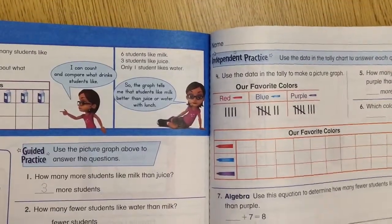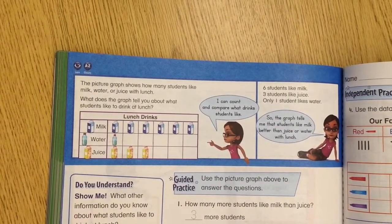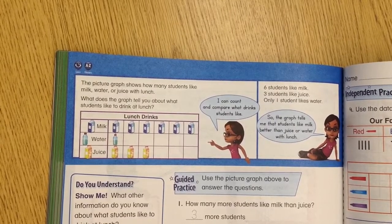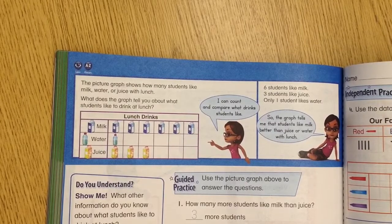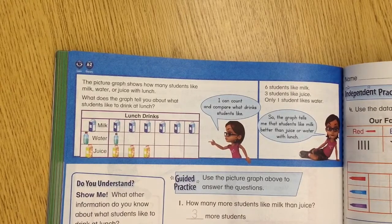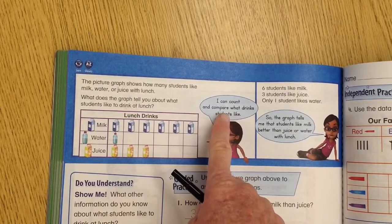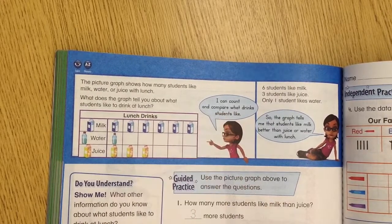Let's turn to page 366 and look at the top. The picture graph shows how many students like milk, water, or juice with lunch. What does the graph tell you about what students like to drink at lunch? Just looking at it, you can tell which one is the favorite. Which one has the biggest bar? The milk. Which one was not very well liked? The water — it only got one vote. And the juice is kind of in the middle.